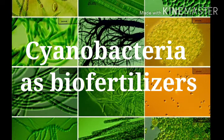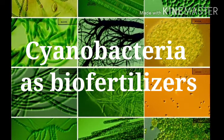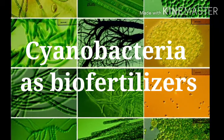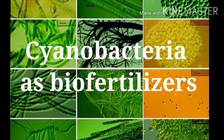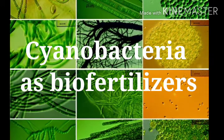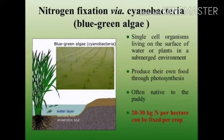Today's topic is cyanobacteria as bio-fertilizer. This term is not new — in your lower classes you have studied about cyanobacteria. It is an aquatic, free-living or terrestrial bacteria. It may be symbiotic, aerobic, and photosynthetic nitrogen-fixing bacteria. It is a single-celled organism living on the surface of water or plants in a submerged environment. It produces its own food through photosynthesis, hence they are autotrophs.